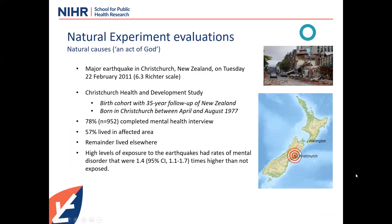Starting from that definition, a good example of a natural experiment is an act of God. This describes a study of a major earthquake in Christchurch in 2011 — which was very unfortunate for everybody involved — but fortunately included a birth cohort with 35 years of follow-up. A group moved away and a group continued to live in Christchurch. Both completed a mental health interview, and comparing the two groups found a higher rate of mental disorders in the exposed group.